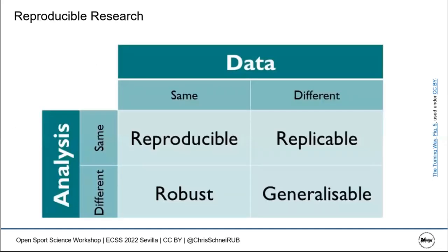Different reproducibility-related terms should be distinguished: reproducibility means same data, same analysis, same results; robustness means same data, different plausible analyses, same results; replicability means different data, same analysis method, same results; and generalizability means a phenomenon holds across different data and different analytical approaches.